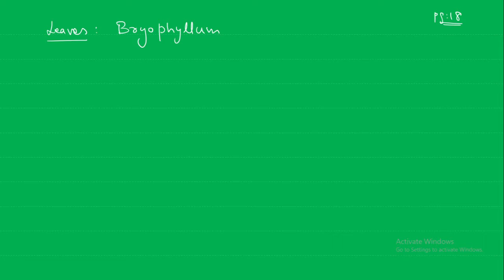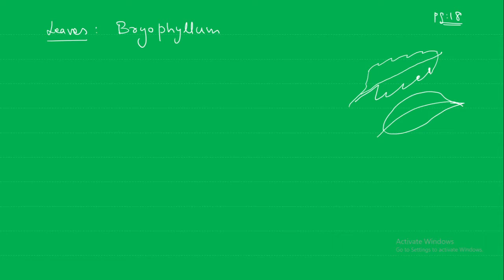These adventitious buds are present at the margin of the leaves. The leaf has zigzag edges — not smooth like a plain leaf. At each point of this zigzag, there will be a bud, and from that bud roots can form. Each of these is able to produce roots.